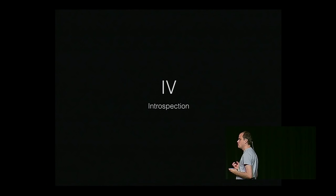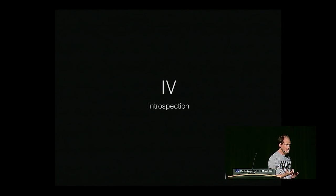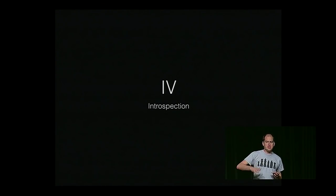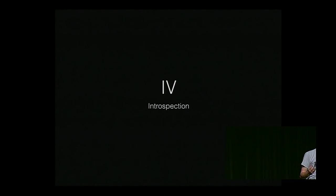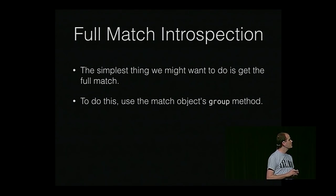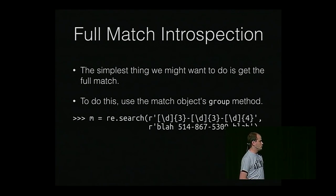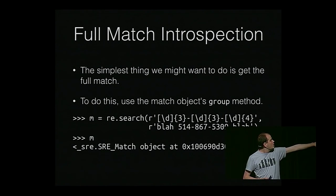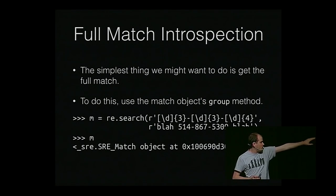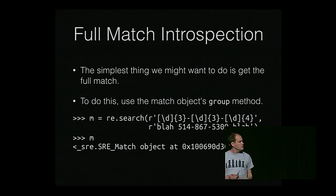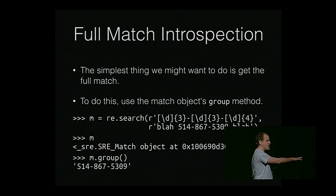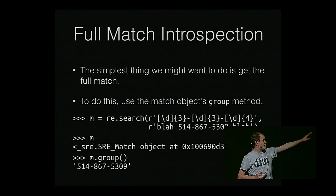So far I've shown you how to match patterns, but I haven't shown you how to pull the matches out. Sometimes you really only care about formatting consistency — did the user enter something that looks right? If you want to pull the pieces out, you need introspection. The quickest, easiest thing to do is introspecting the full match with the .group() method. Here we have a regex looking for a phone number with an area code, and a haystack string with some garbage at the beginning and end and our phone number in the middle. Running .group() on the match object gives the full match — just the phone number and nothing else.